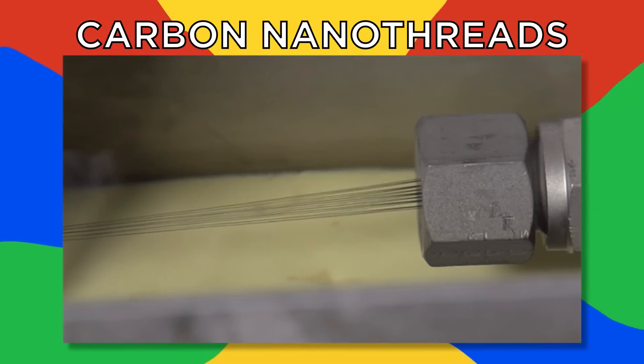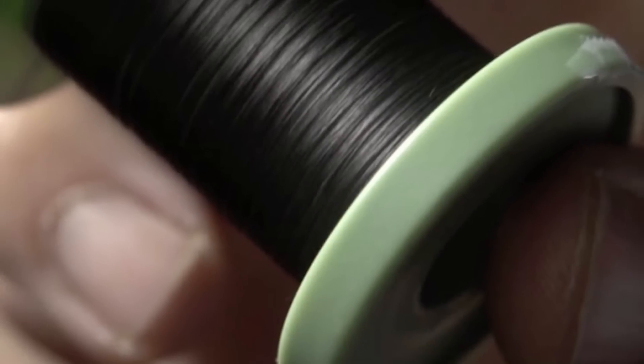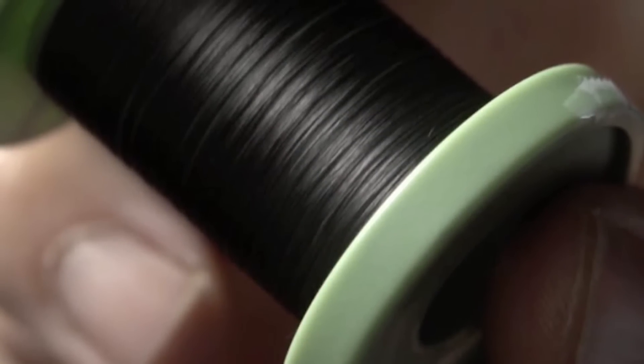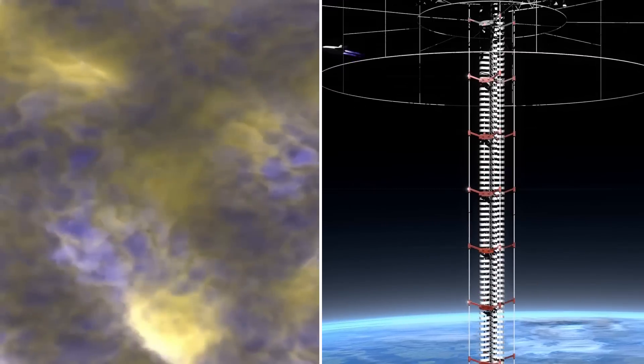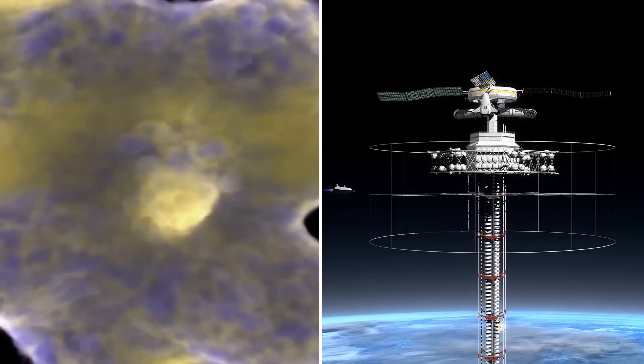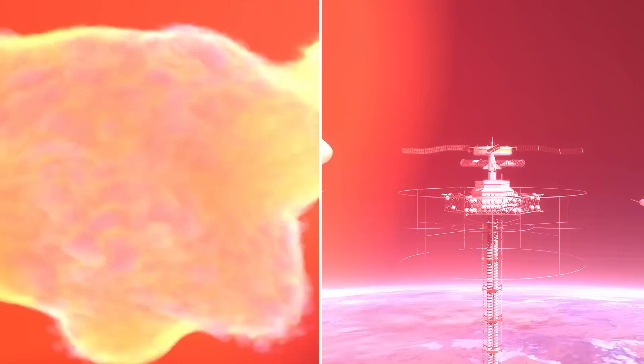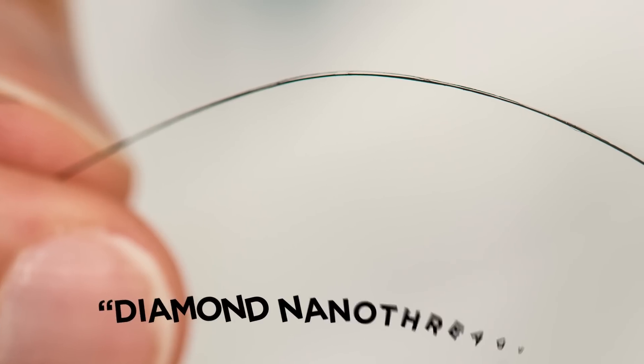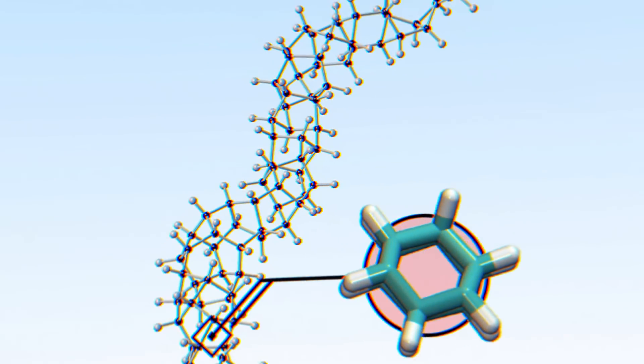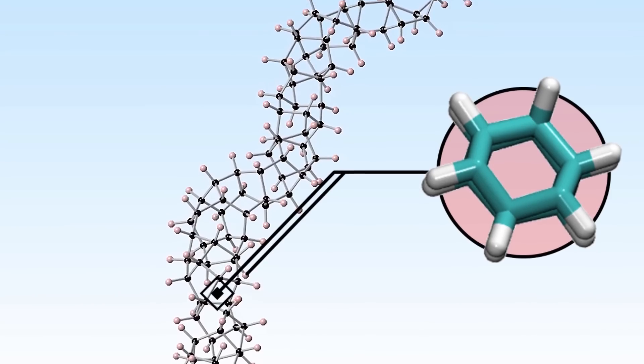Number seven, carbon nanothreads. This substance is capable of a lot of things. Here are two examples. It can be used to cure cancer and even build an elevator to space. Quite a creation, right? This man-made fiber is also known as diamond nanothreads. It's composed of carbon atoms arranged in a zigzagging structure.